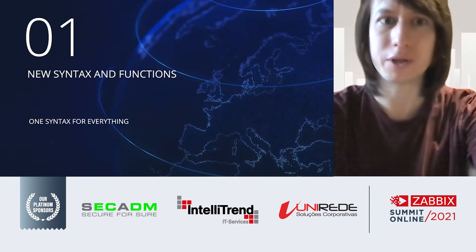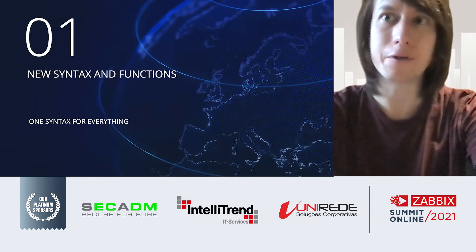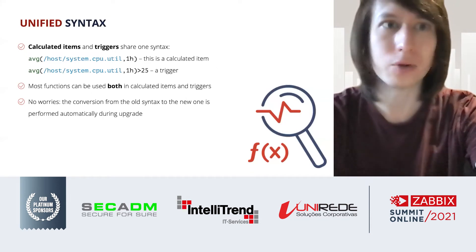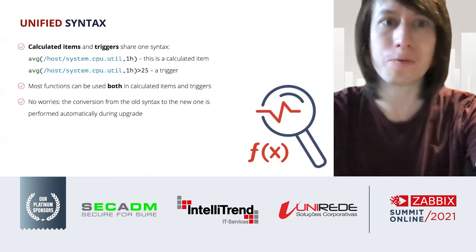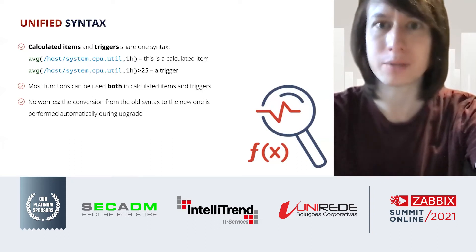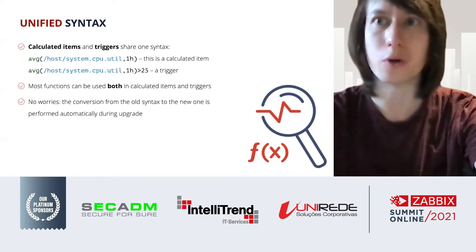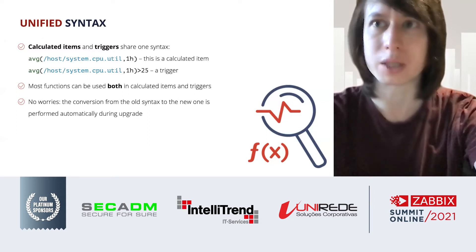First, let me talk about the syntax. This was one of the major things on the roadmap to Zabbix 6, because we wanted to remove many limitations and make everything simpler and more unified. Now calculated items and triggers share one syntax — you can see the same formula being used both for a calculated item and for defining a trigger condition. Most functions can be used in both, and you shouldn't worry about rewriting your expressions when you upgrade to Zabbix 6; all conversion will be carried out automatically.